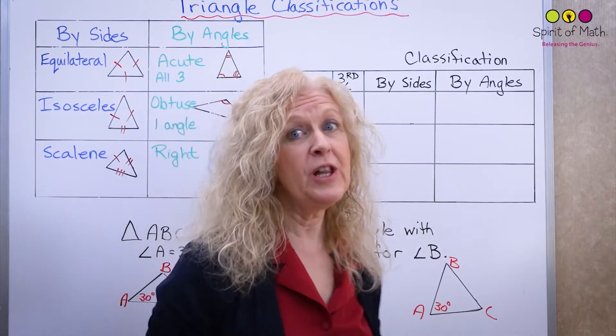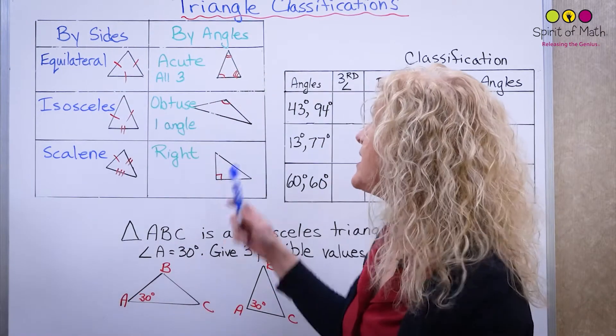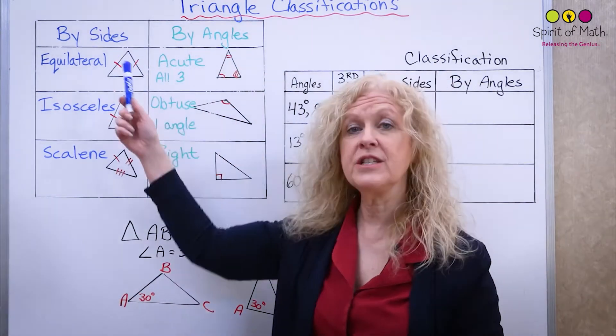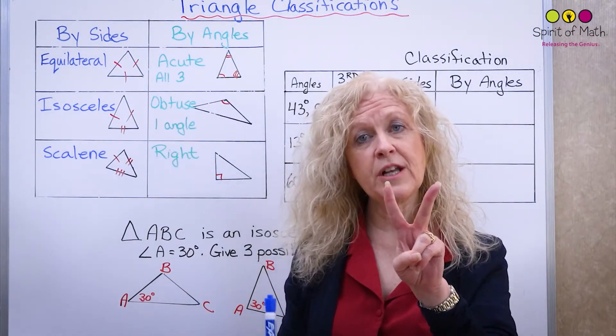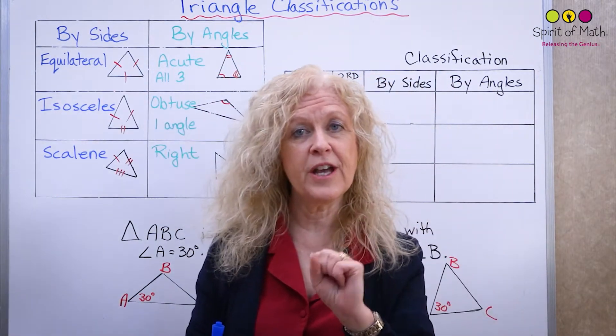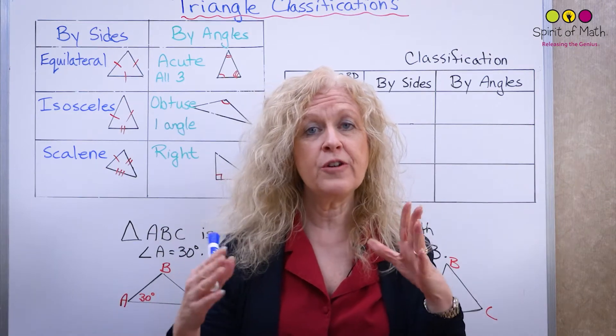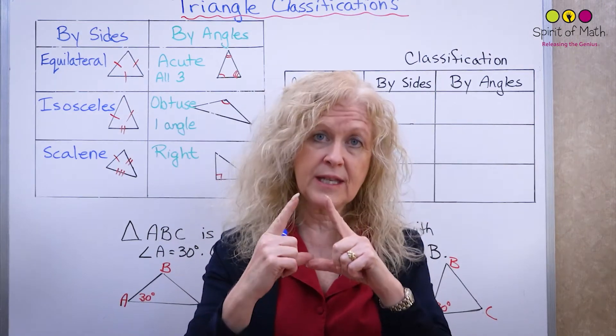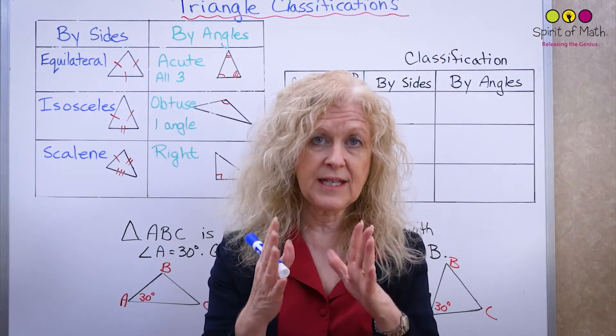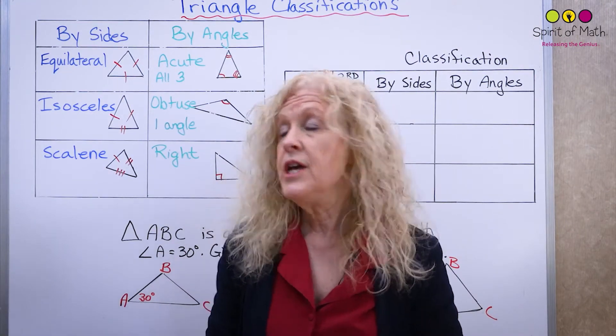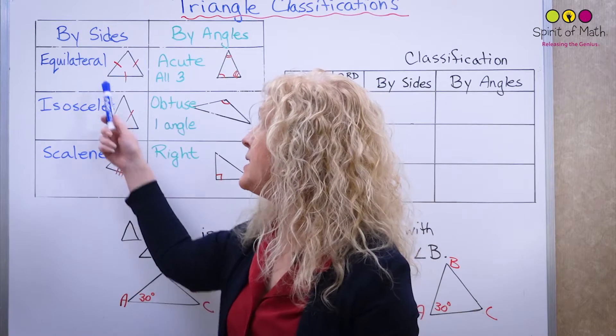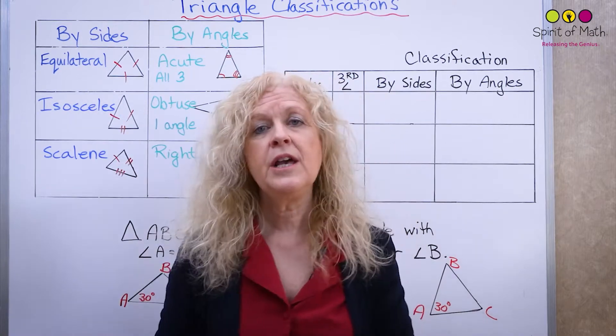First of all, let's look at the classifications. There are two ways to classify triangles: the first is by the sides and the second is by the angles. So if we look at the sides...